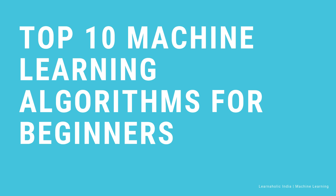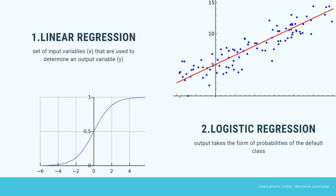Now let's see the top 10 machine learning algorithms for beginners one by one. In this tutorial, I am only giving you a brief idea about each algorithm. Let's start with linear regression. In machine learning, we have a set of input variables x used to determine an output variable y. A relationship exists between the input and output variables, and the goal of machine learning is to quantify this relationship.